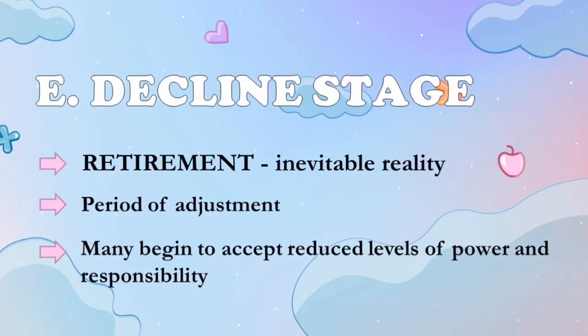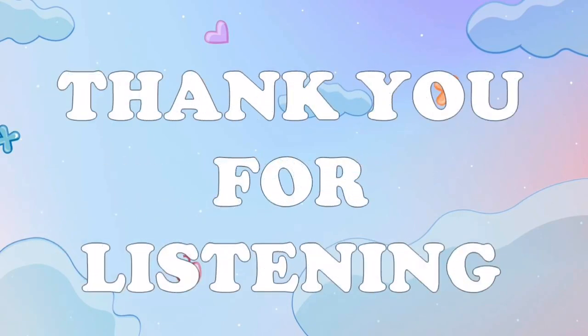The decline stage: as retirement becomes an inevitable reality, in the decline stage there is frequently a period of adjustment where many begin to accept reduced levels of power and responsibility. We cannot stop aging. Of course, in work, we are not forever in our industry or career. During this stage, adjustments will be made — we accept that our power levels and responsibilities are being reduced. Hope you learned something from the discussion. Thank you for listening!